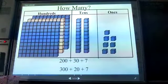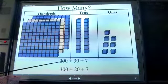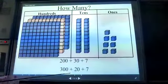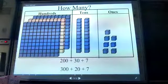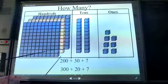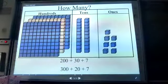You can easily identify how many are there. This is a question for you: is it 200 plus 30 plus 7, or 300 plus 20 plus 7? Yes, the second one is correct. You can see there are 300, 20 tens, and 7 ones.